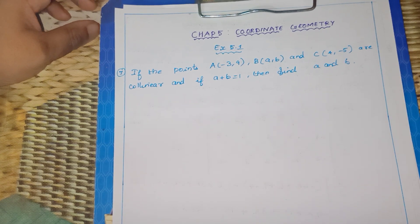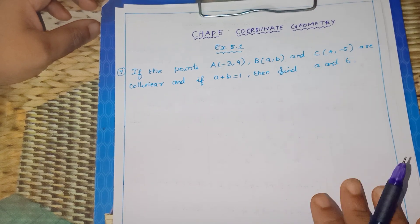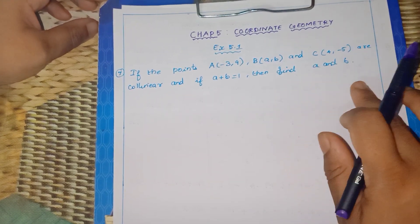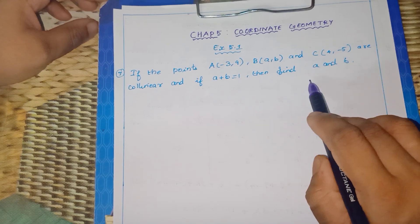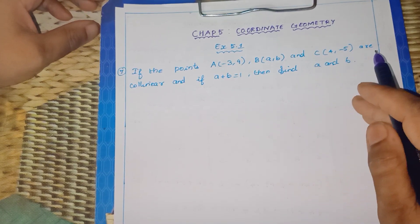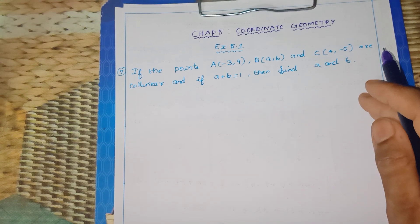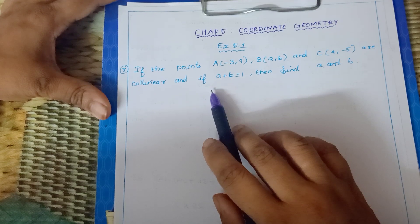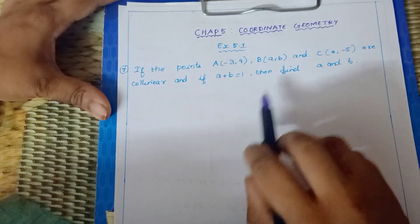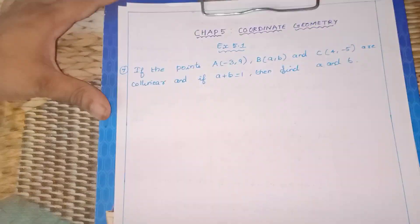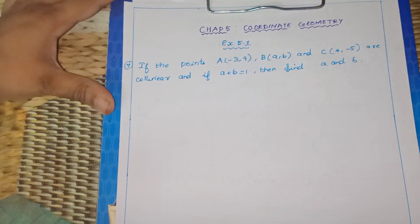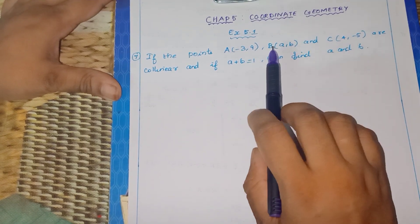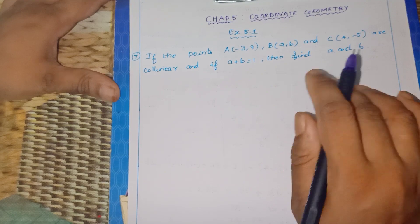Collinear — you know the coordinate geometry concept. Collinear means area is 0. When 3 points are collinear, the area of the triangle formed by them is 0. So, collinear means area of the triangle is 0.